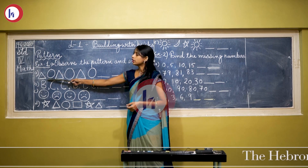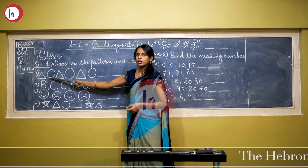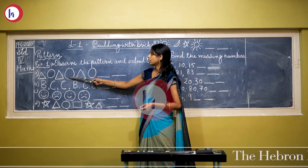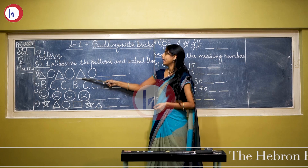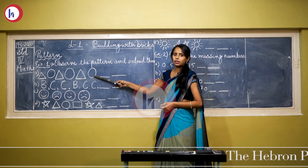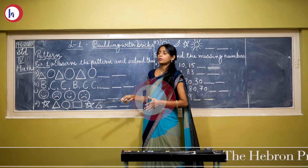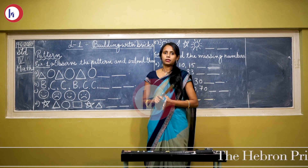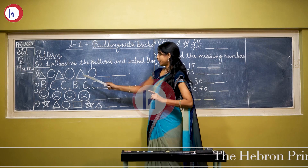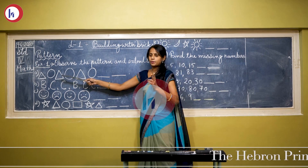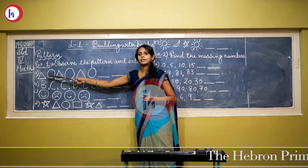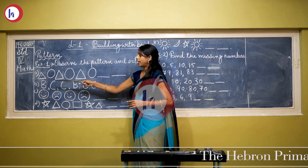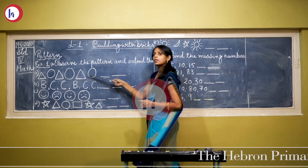First is triangle, then circle, then triangle, then circle, then triangle and then circle. It means there are two shapes in this pattern — only one pattern and two shapes. First is triangle and then second is circle, and this process is repeating.